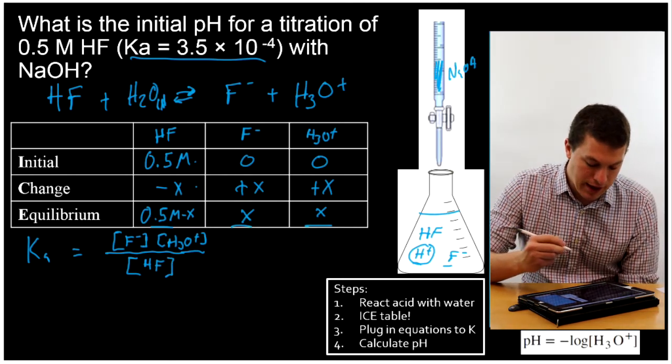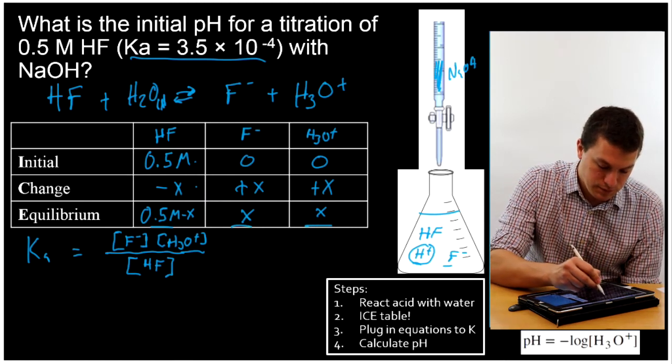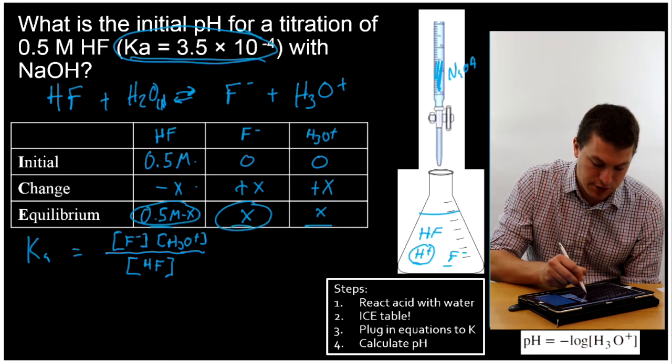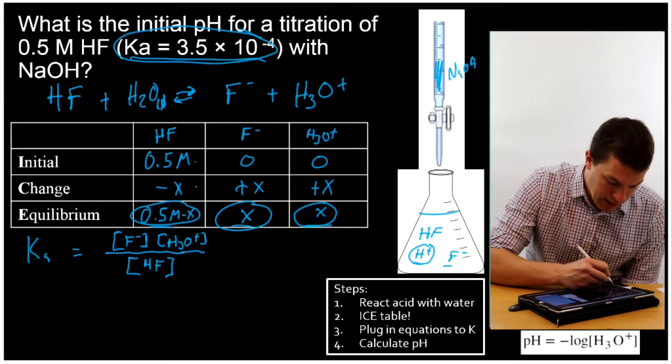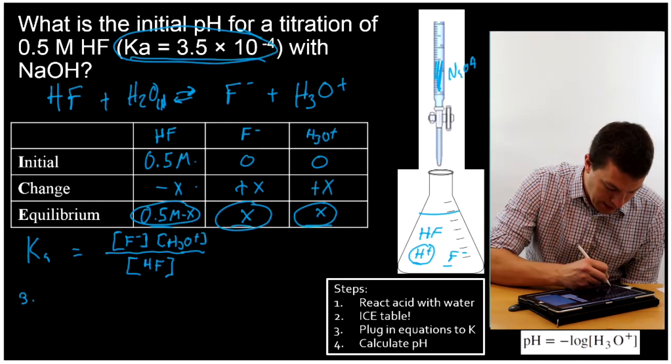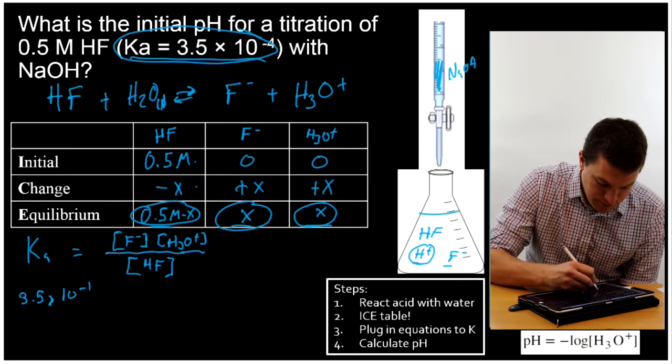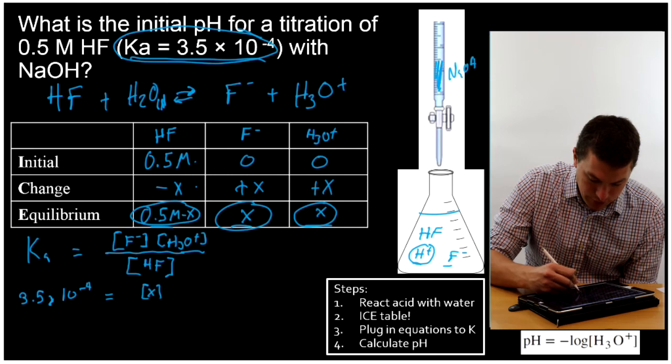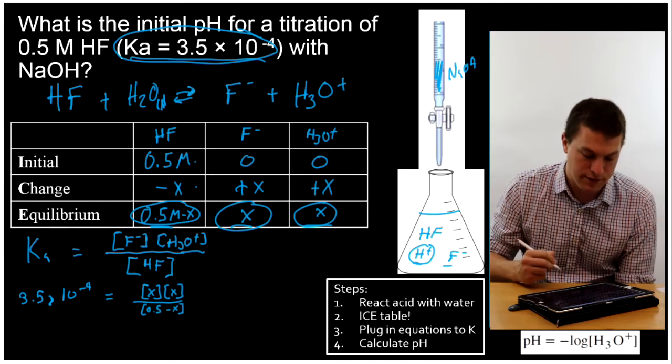Alright, now I need to go ahead and plug in all the numbers I have. So I'm going to plug in this for Ka, and each of these equations for the concentration at equilibrium. What we're doing is solving for the equilibrium concentration. And that means we're going to get 3.5 times 10 to the minus 4 is equal to X up top for fluorine, X up top for H3O+, all over 0.5 minus X for our HF.